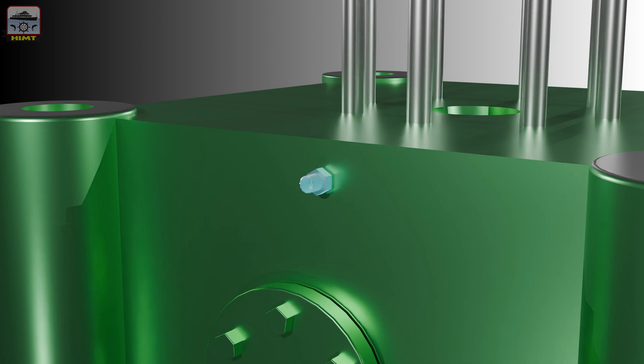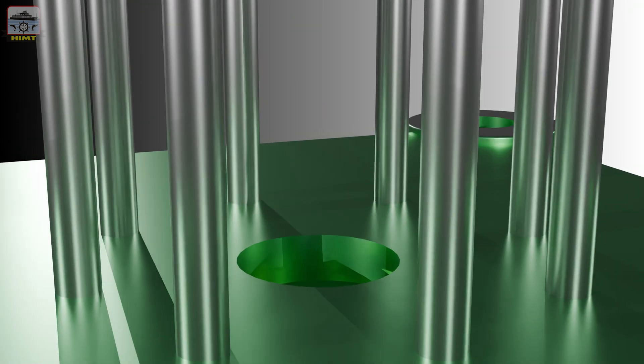The sealing air entering the housing at this port prevents the exhaust gas from entering into the gap between the spindle guide and the spindle. The housing accommodates different components for operating the exhaust valve.